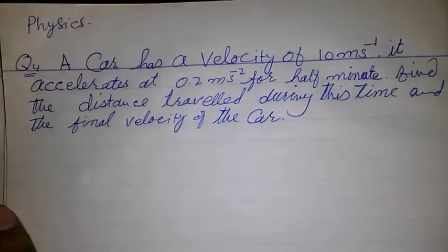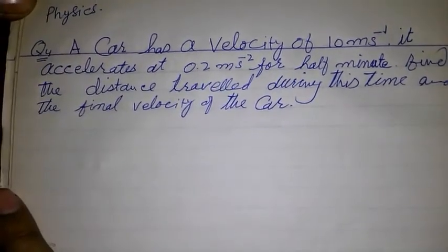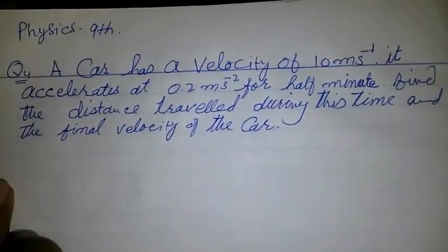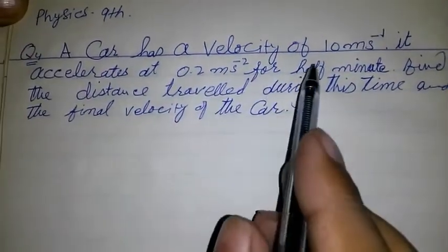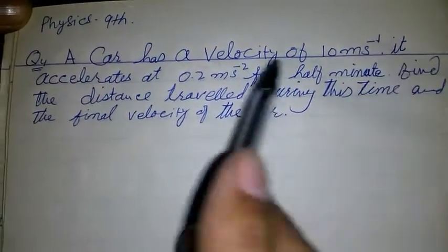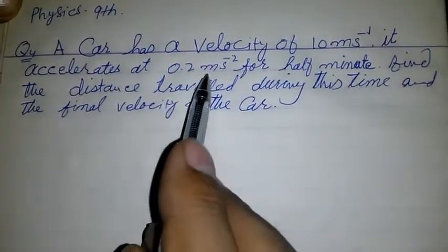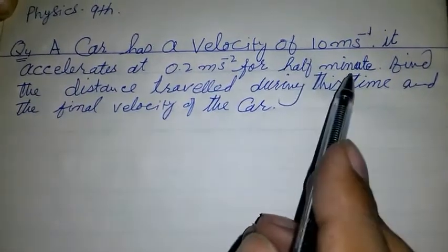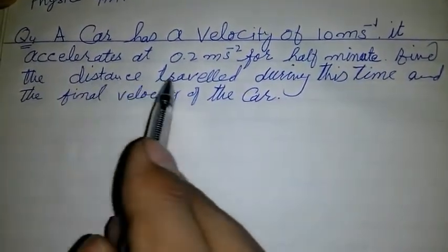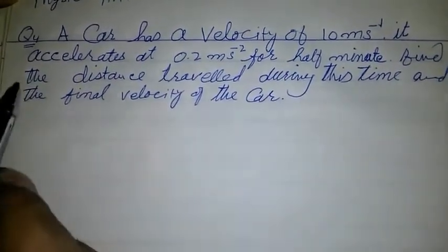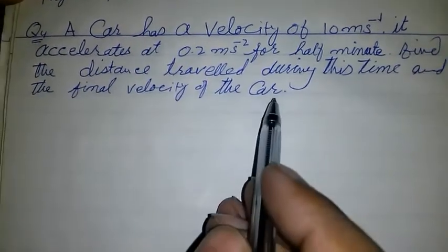Bismillahirrahmanirrahim, today we are solving a numerical problem from 9th physics. The question is: a car has a velocity of 10 meter per second, it accelerates at 0.2 meter per second squared for half a minute. Find the distance traveled during this time and the final velocity of the car.